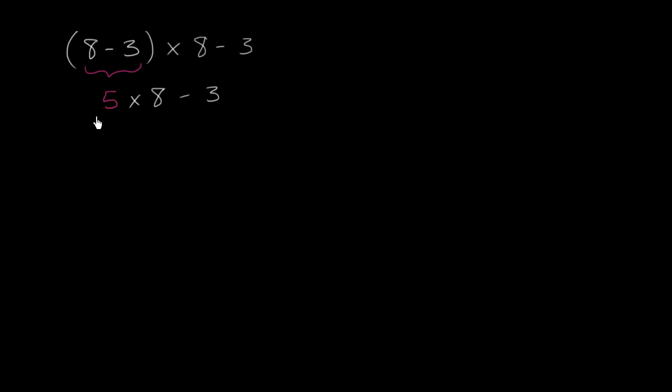So here we're going to multiply 5 times 8 to get 40. And then we're going to subtract 3 to get 37. Now let's think about what this would evaluate to if we did not have the parentheses.